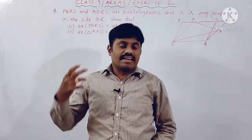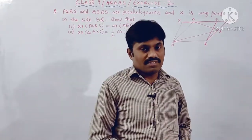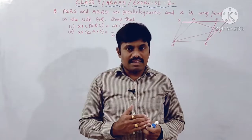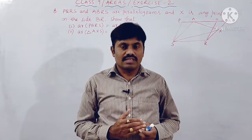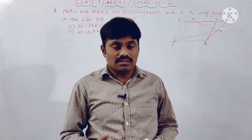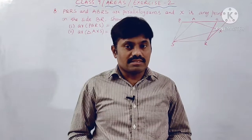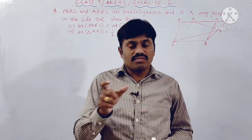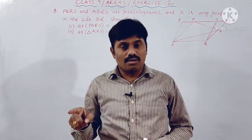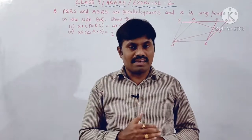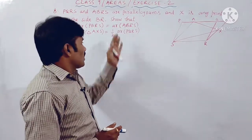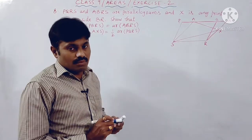To solve this, we recall concepts from the previous session. If two parallelograms are on the same base and between the same parallel lines, they are equal in area. Also, the area of a triangle is equal to half of the area of a parallelogram when they share the same base and lie between the same parallel lines. Based on these concepts we are going to prove what is required from this problem.